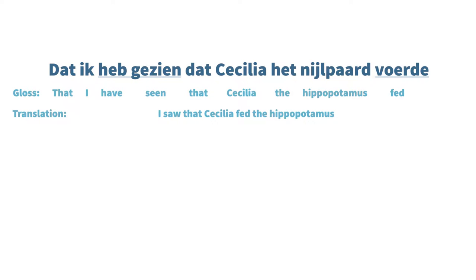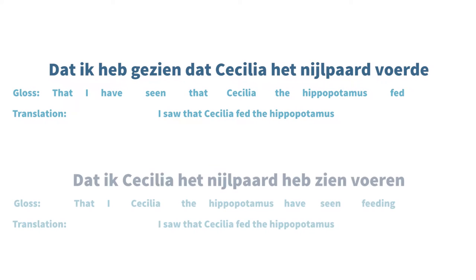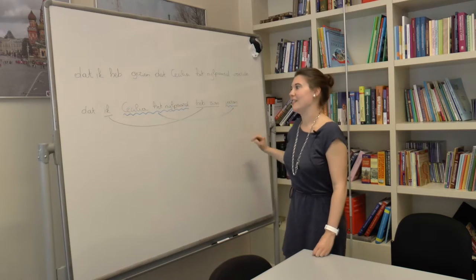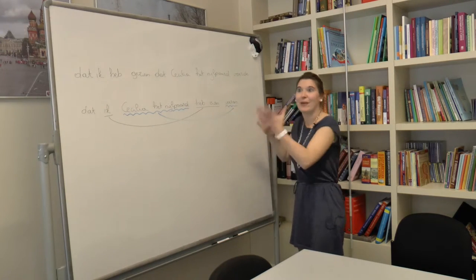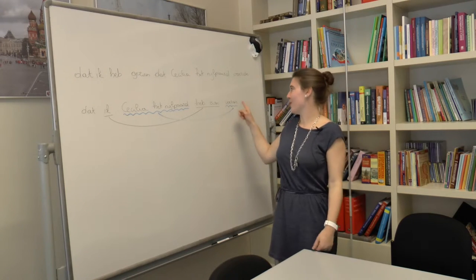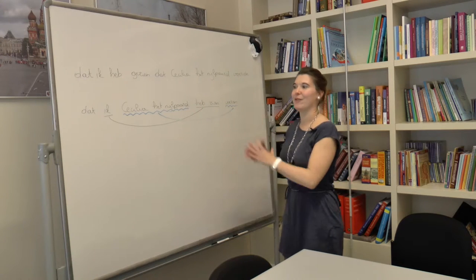But in the second sentence, 'dat ik Cecilia het paard heb gezien voeren,' we see that all the non-verbal elements occur at the front of the sentence, whereas the verbs cluster at the end: heb gezien voeren. And so they are separated from their non-verbal arguments which belong to those verbs. And this results in these cross-serial dependencies.